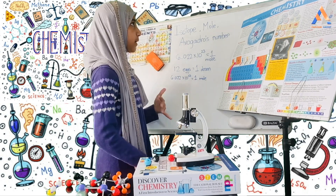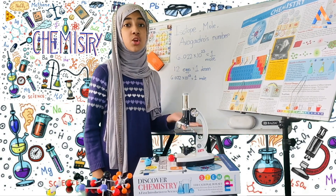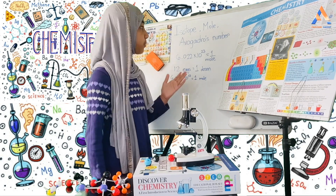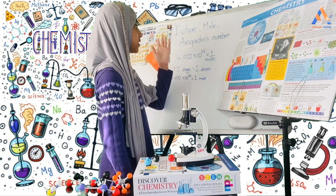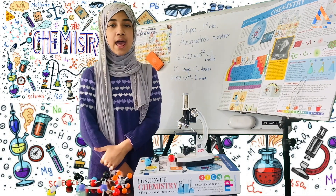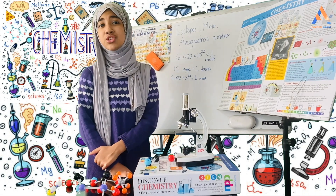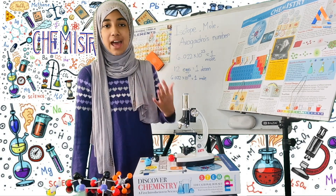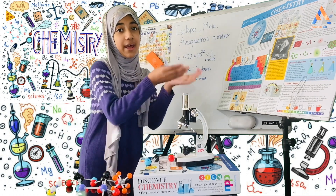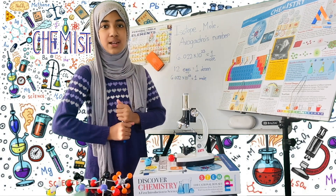So dear viewers, in my previous video I showed you the basics and terminology of chemistry. Here I showed you about the isotope, mole, and Avogadro's number, which I hope you understood. Inshallah, in my next video I will show you the journey of an atom to become an ion — how it turns from an atom to an ion. So keep watching. Thank you and as-salamu alaykum.